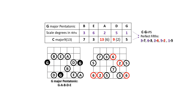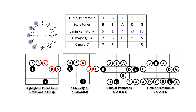Superimposing the related G major pentatonic over C major 7 also yields the same notes. Since the roots C and G are a fifth apart, the highlighted notes are a perfect fifth above the major pentatonic scale degrees 3, 6, 2, 5, 1. Superimposing the E minor or G major pentatonic scale over C major 7 emphasizes the chord tones 3, 5, and 7 and highlights the color tones 9 and 13. The sound you'll hear is a C major 13. Listen to the E minor and G major pentatonic scales played over C major 7.